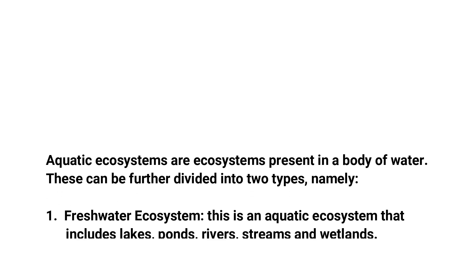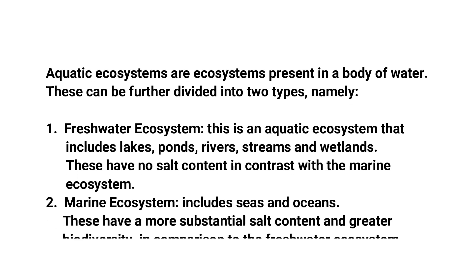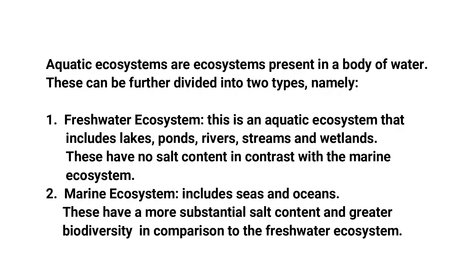Aquatic ecosystems are ecosystems present in a body of water. This can be further divided into two types: the first is the freshwater ecosystem. This is an aquatic ecosystem that includes lakes, ponds, rivers, streams, and wetlands. These have no salt content, in contrast with the marine ecosystem.